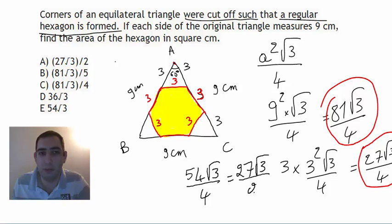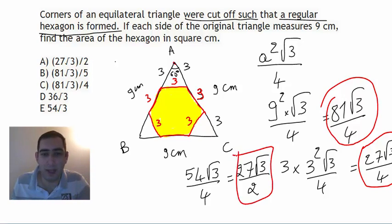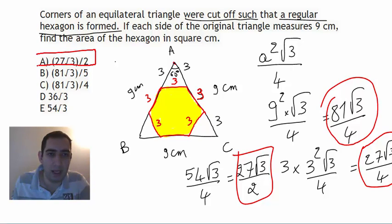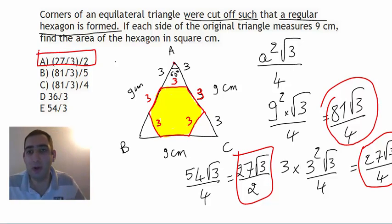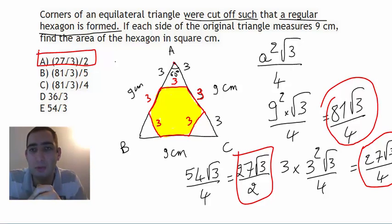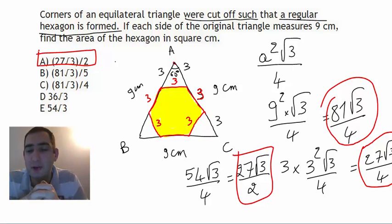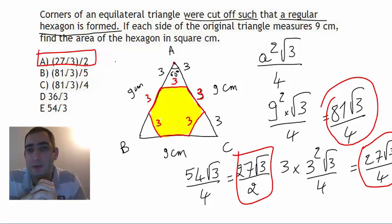So the answer is 27√3 / 2, which is answer choice A. For those interested in a GMAT online course with me face to face, just like here, you can find my email in the description of this video and send me an email to discuss.